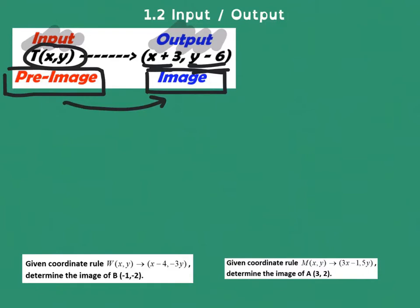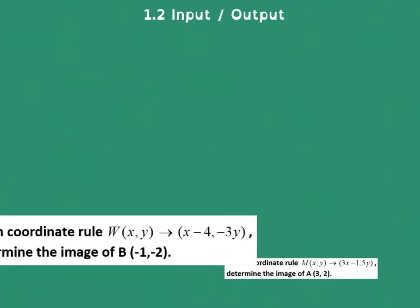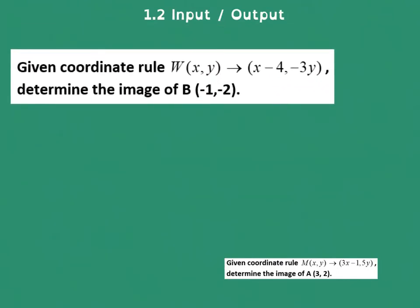Let's try using these coordinate rules to solve for some new points. All right, let's bring this first one up. So this coordinate rule says we're going to subtract 4 from x, and we're going to multiply y by negative 3.